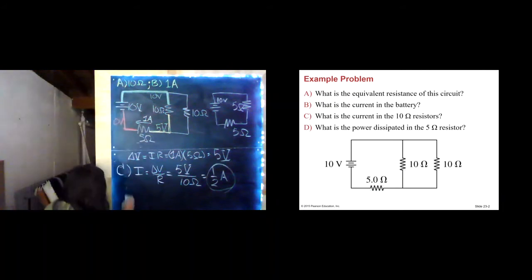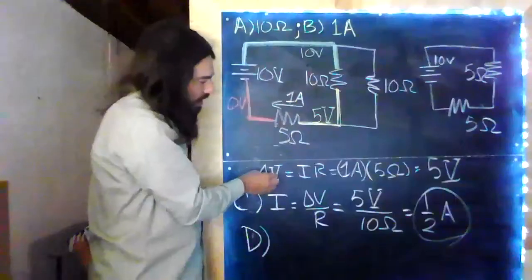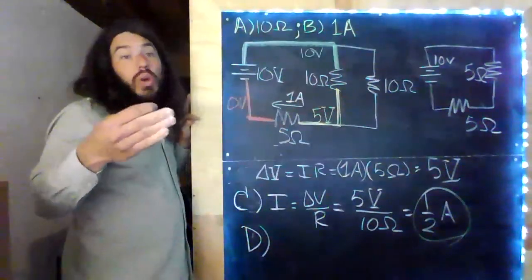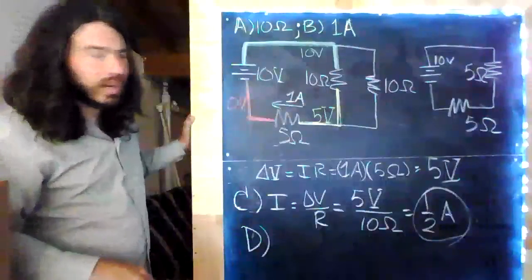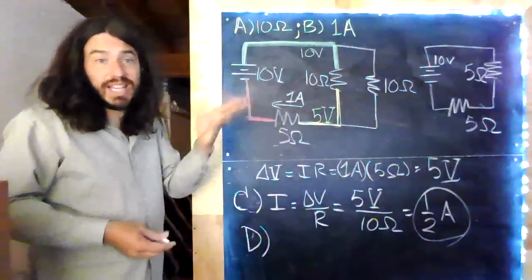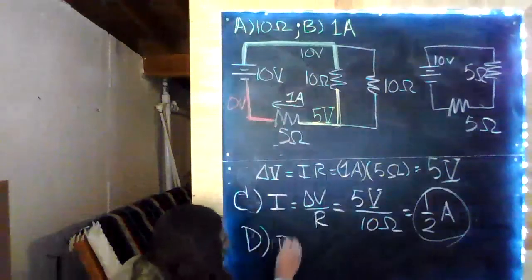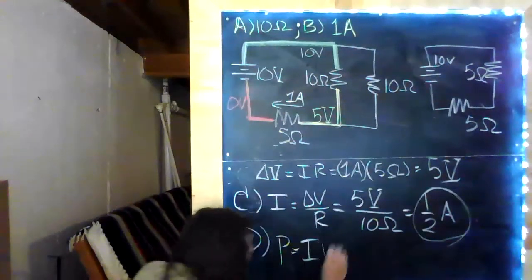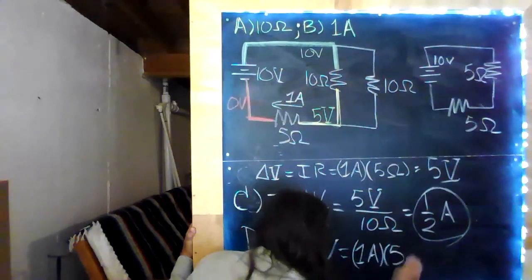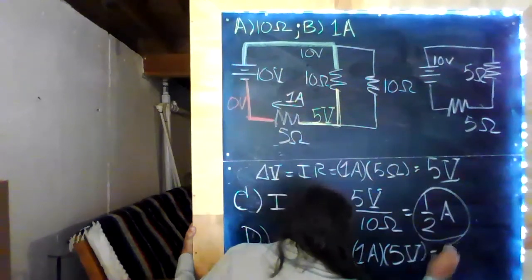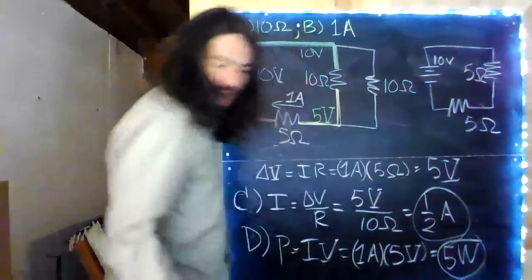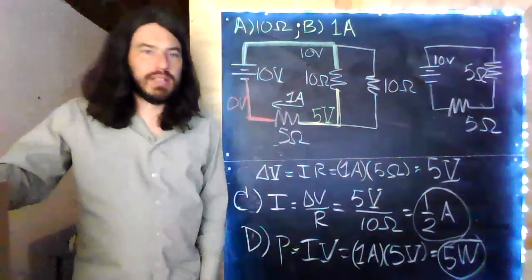Now, we're ready to answer D. We now, because right here, we found the potential drop across there. We could use that. We already knew what I was through that resistor. So, we could have used I squared R. A lot of ways we could do it. In fact, we know V, I, and R for this resistor. So, we can use any of those three power equations. I don't know, I'll just use P equals I times V equals 5 watts. That is the power dissipated.